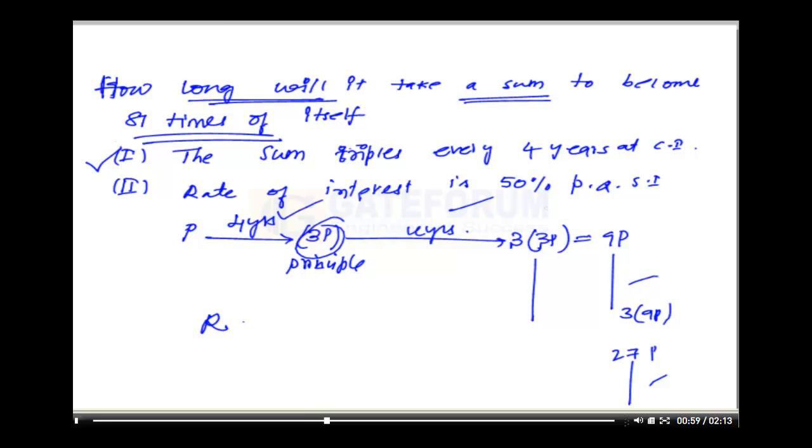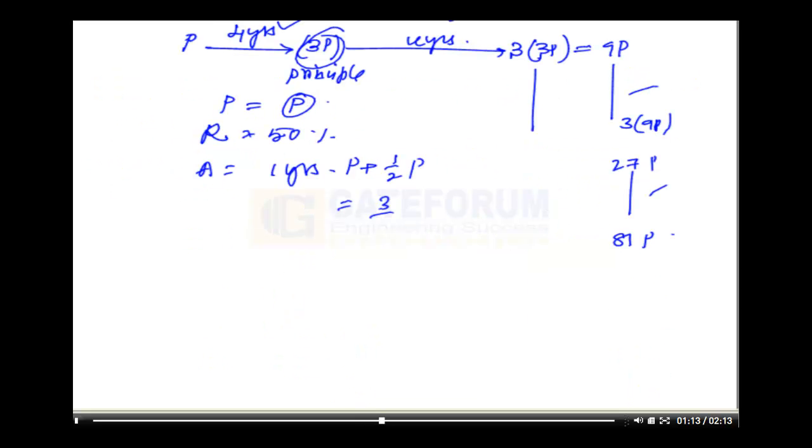Rate of interest is given as 50%. Now let the sum be some P and amount after 1 year. After 1 year this P will be increased by half P. So this will become 3 by 2P.